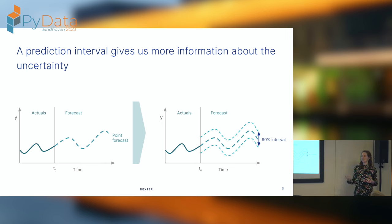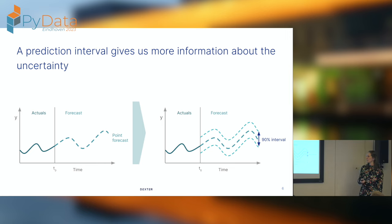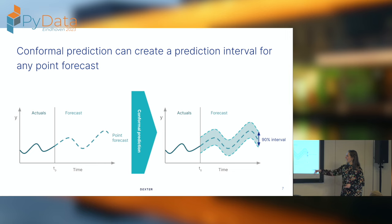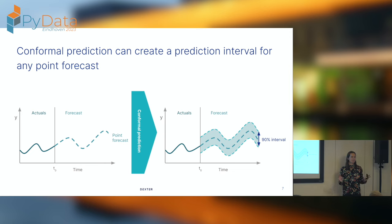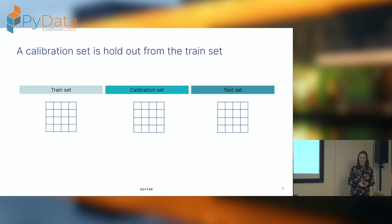There can be methods that don't have correct coverage. Coverage refers to the amount of points that are actually within the interval you give. A method that can give us correct coverage is conformal prediction — that's why I want to talk about it today. A nice thing about this method is that it's independent of your model. You can use any point forecast model you already have, keep using it exactly as it is, and just add some extra information. With that, it also has a statistical guarantee of correct coverage.